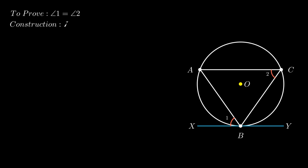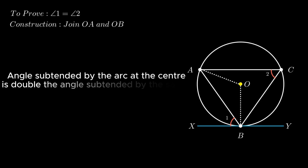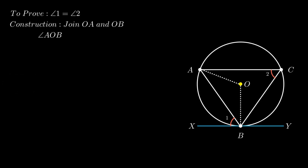Join center point O to points A and B. Since angle AOB and angle 2 are subtended by the same arc, by the theorem that the angle subtended by an arc at the center is double the angle subtended by the same arc on the remaining part of the circle, we conclude that angle AOB is twice angle 2.